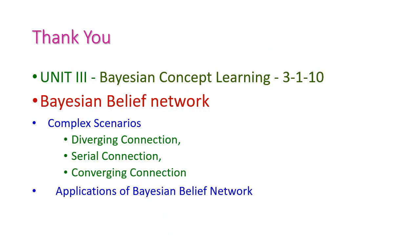So far, we have seen the Bayesian belief network from the third unit, Bayesian concept learning. In this class, we have seen the complex scenarios and applications of Bayesian belief network. When it comes to complex scenarios, there are three different connections: diverging connection, serial connection, and converging connection. This Bayesian belief network is applicable in solving many real-time applications. In the next class, we will start the second part of the third unit. Thank you.